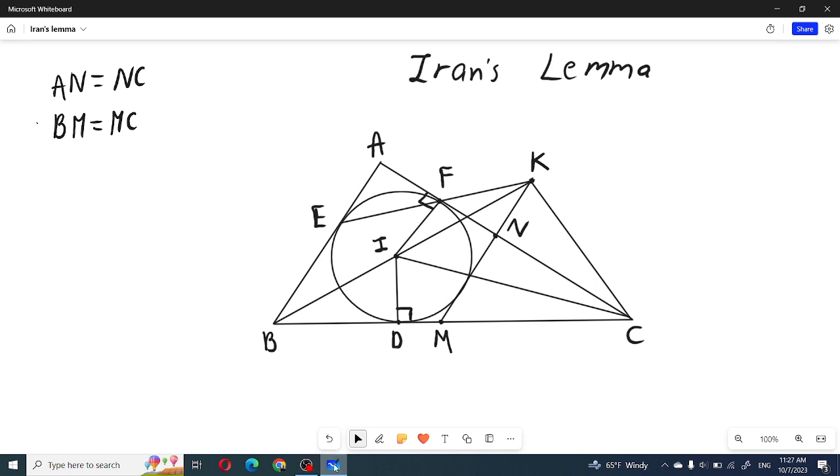Hello, today we will discuss Iran's Lemma configuration. In this picture, we are given E and F are tangent points of the incircle to AB and AC sides. If we take the intersection of EF and BI, then call this point K. We need to show that